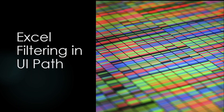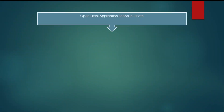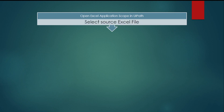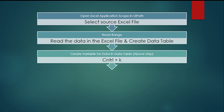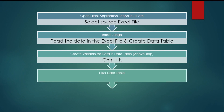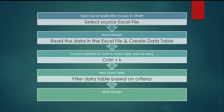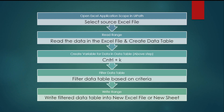In today's video we will see how we can perform filtering in Excel using UiPath. The first thing we will do is create a project in UiPath, open the Excel application scope, select a source file, read the data using read range to create a data table, write the data table into a variable, filter the data using the criteria we need, and finally write the new data into an Excel file or into a new sheet.